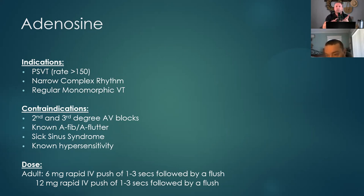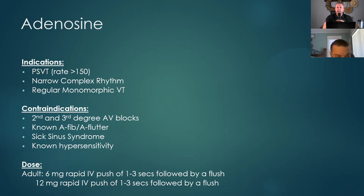If they start to become symptomatic — pale, cool, diaphoretic, chest pain, shortness of breath — that constitutes an unstable patient. I'm going to give Edison medicine, electricity. For fast rates in an unstable patient, whether sinus or ventricular in origin, we're going to do synchronized cardioversion. The most important thing when you do synchronized cardioversion is to always hit the sync button. If you don't, you're just randomly delivering electricity — you're going to cause an R-on-T phenomenon and throw them into V-fib. I've actually seen that happen.